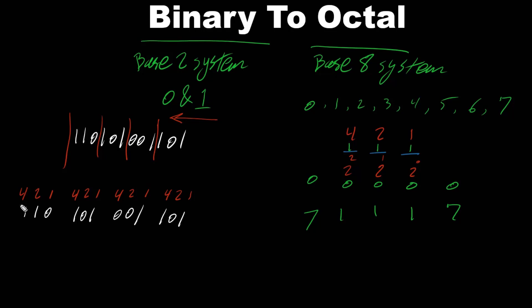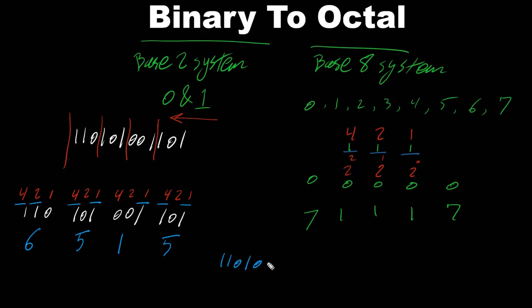We add the values where bits are turned on (1 means on, 0 means off). First group: 4 and 2 turned on → 6. Second group: 4 and 1 turned on → 5. Third group: only 1 turned on → 1. Fourth group: 4 and 1 turned on → 5. So binary 1 1 0 1 0 1 0 1 1 0 1 equals octal 6 5 1 5.